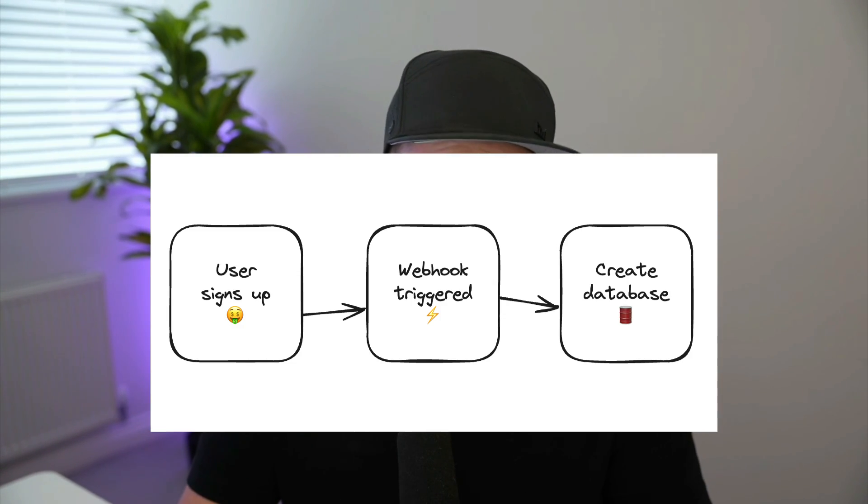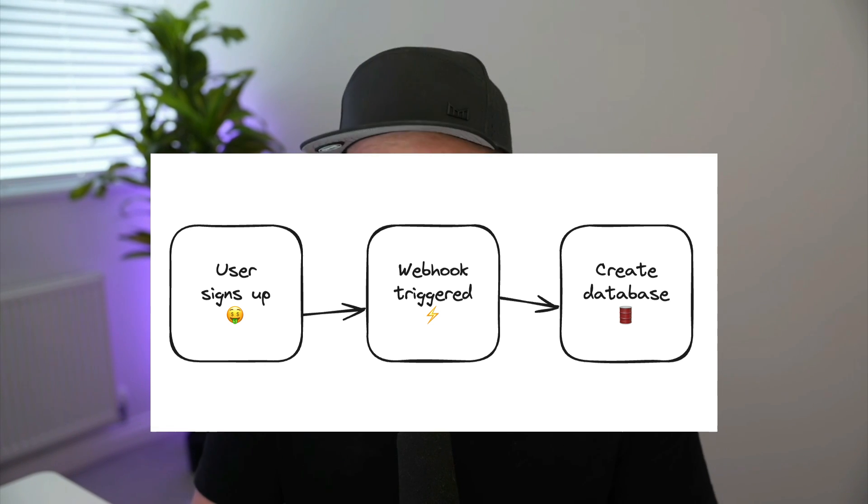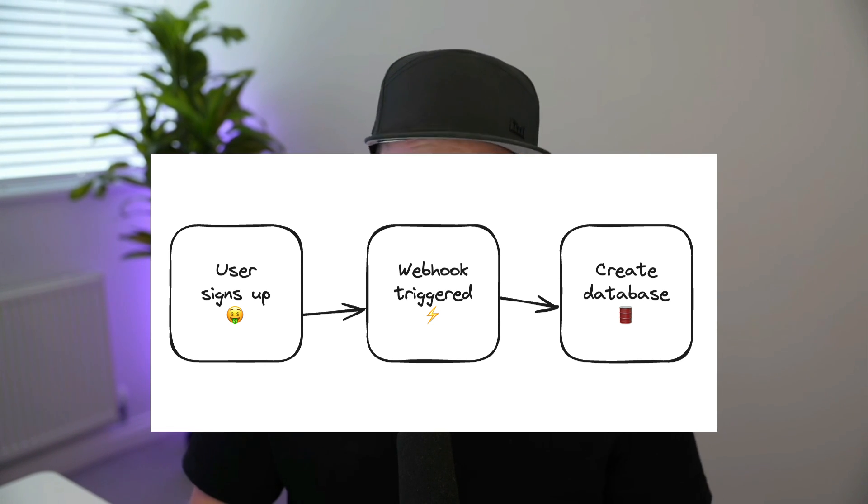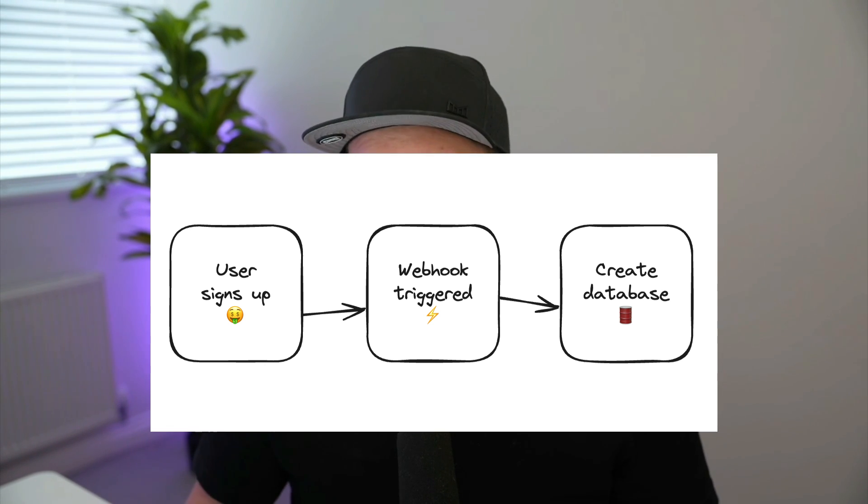Transitioning to a per-user database model with SQLite was simpler than I expected. The Turso platform allows you to seed databases from other databases, so it felt like I was heading in the right direction. Because my application was using Clerk, all I needed to do was add a new webhook that was triggered when a new user signed up to create that database.